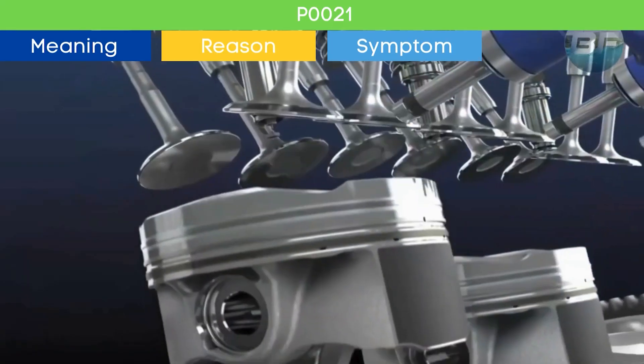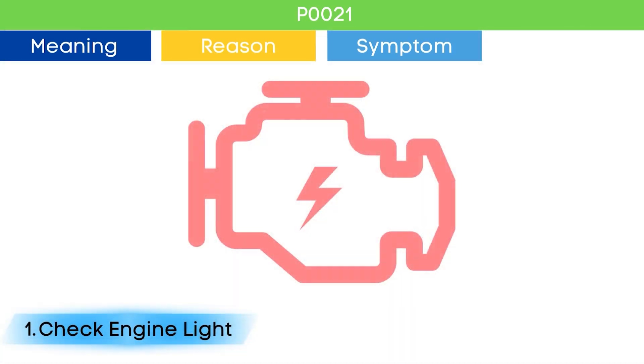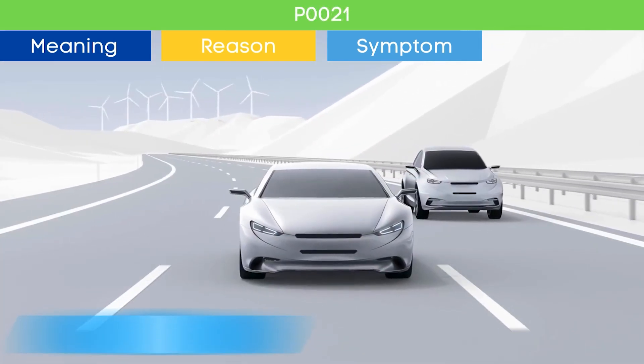Symptom number one: check engine light. The check engine light comes on if there are any active trouble codes related to EMS.